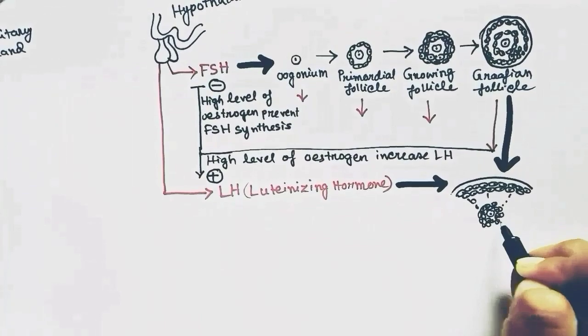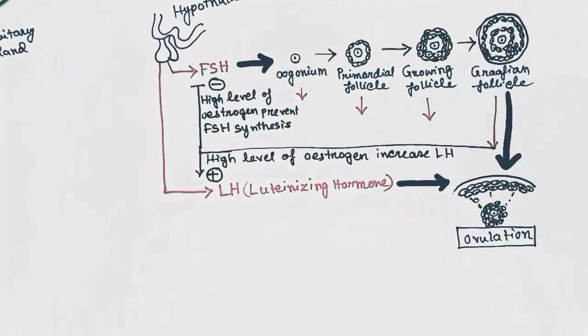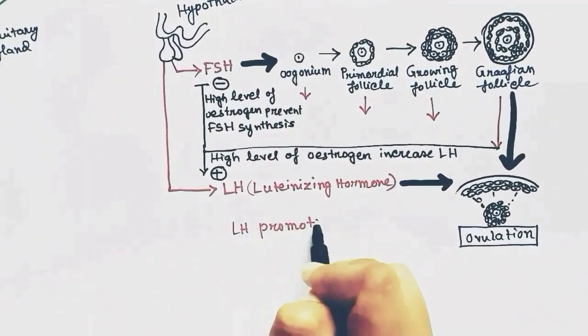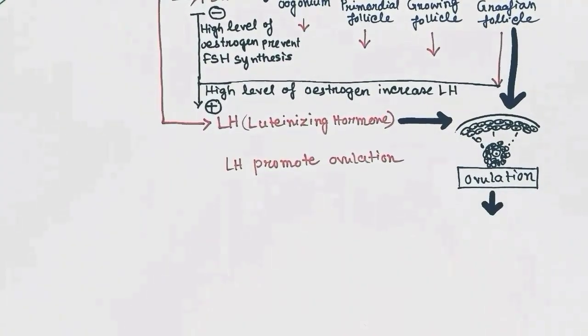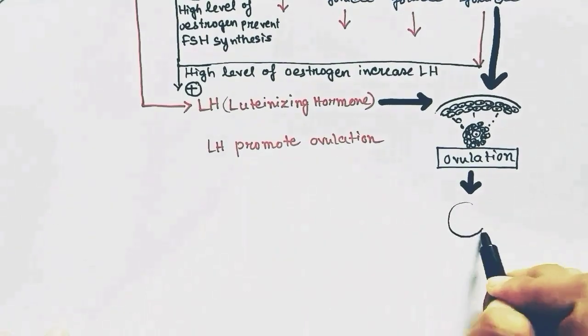Graafian follicle ruptures and the oocyte is released. After ovulation, the follicular cells forms a corpus luteum without the oocyte.